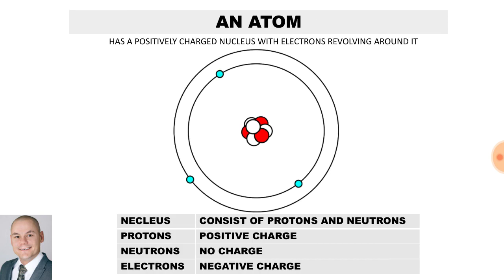What is an atom? An atom has a positively charged nucleus with electrons revolving around it. The nucleus consists of protons and neutrons. The protons are positively charged, the neutrons have no charge, and the electrons are negatively charged.